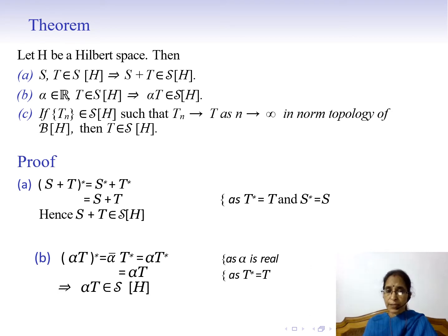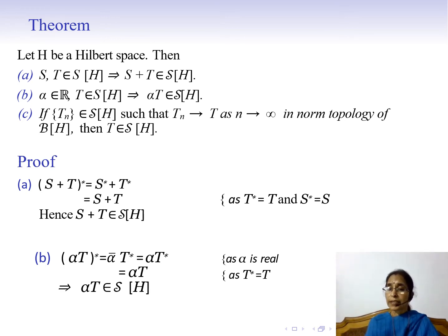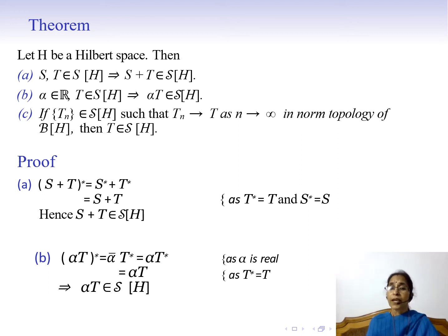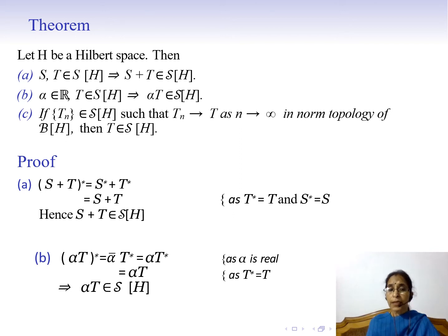Let us prove result A. We must show S + T is self-adjoint where S and T are self-adjoint operators. We find the Hilbert adjoint of S + T: (S + T)* = S* + T*. Since S and T are self-adjoint, S* = S and T* = T. Therefore (S + T)* = S + T, and S + T is a self-adjoint operator on H.